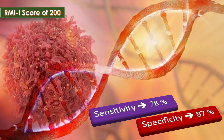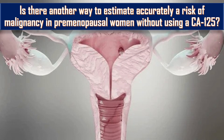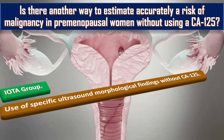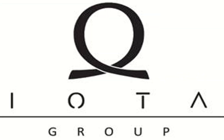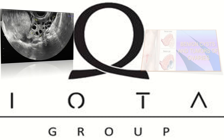Is there another way to accurately estimate the risk of malignancy in premenopausal women without utilizing CA-125? There are simple ultrasound rules derived from the IOTA group. The use of specific ultrasound morphological findings without CA-125 has shown high sensitivity, specificity, and likelihood ratio. If not clearly classifiable from these rules, further investigation by specialist gynecological ultrasound is appropriate. The IOTA group has published the largest study to date investigating the use of ultrasound in differentiating benign and malignant ovarian masses.